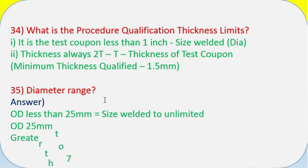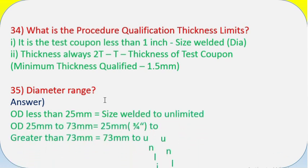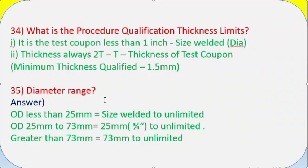Question 35: Diameter range? Answer: OD less than 25 mm equals size welded to unlimited. OD 25 mm to 73 mm equals 25 mm (3/4 inch) to unlimited. Greater than 73 mm equals 73 mm to unlimited.